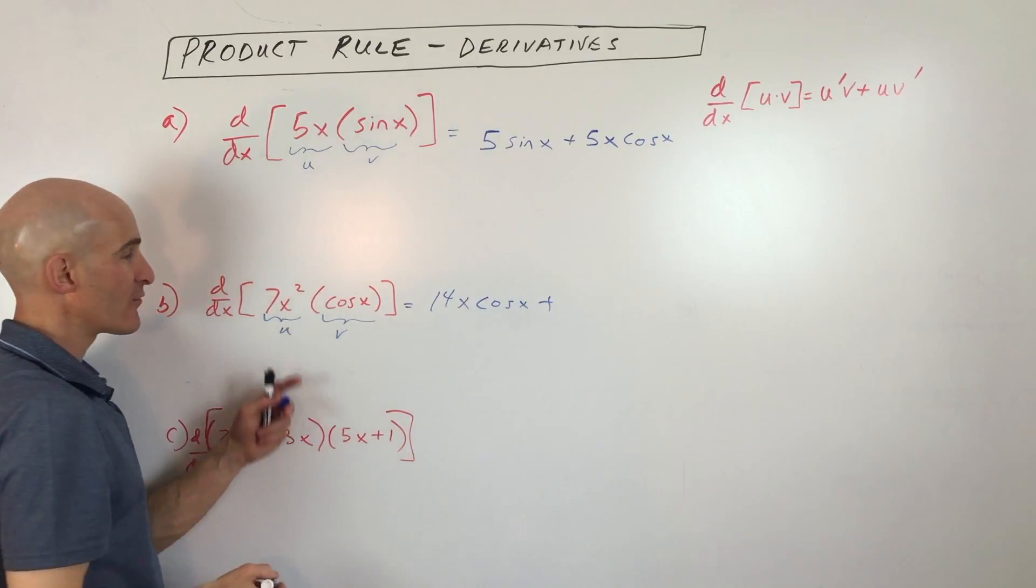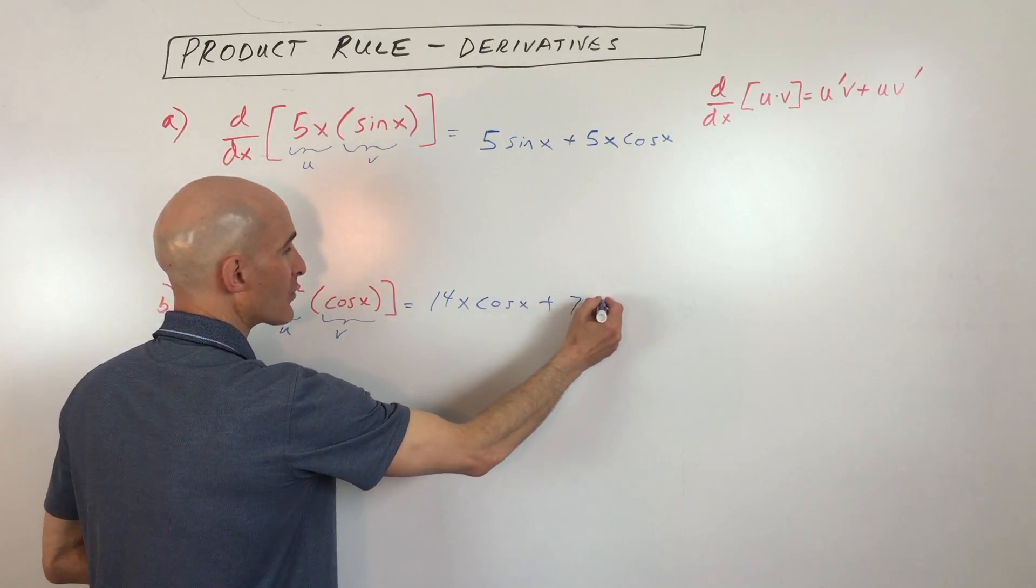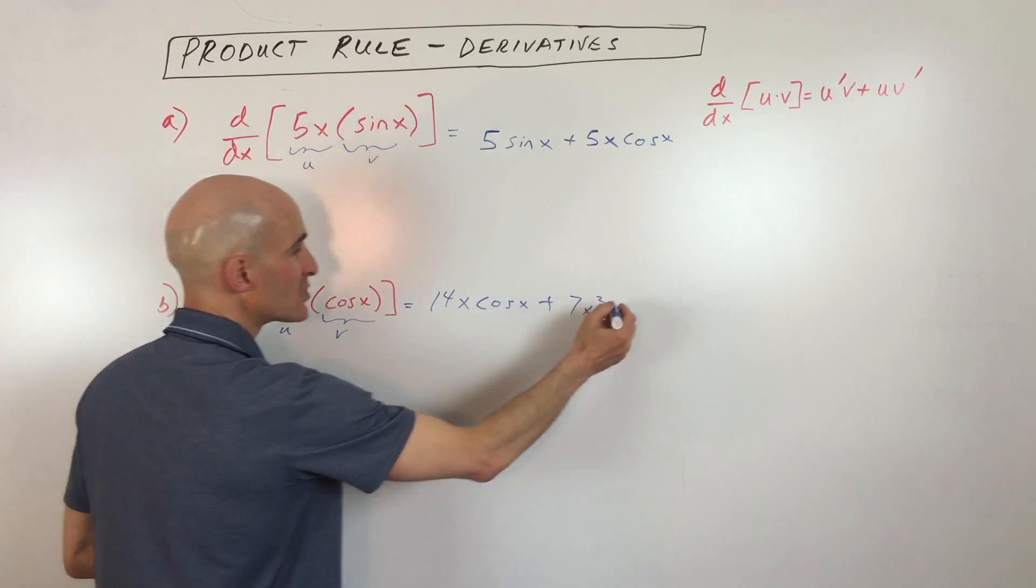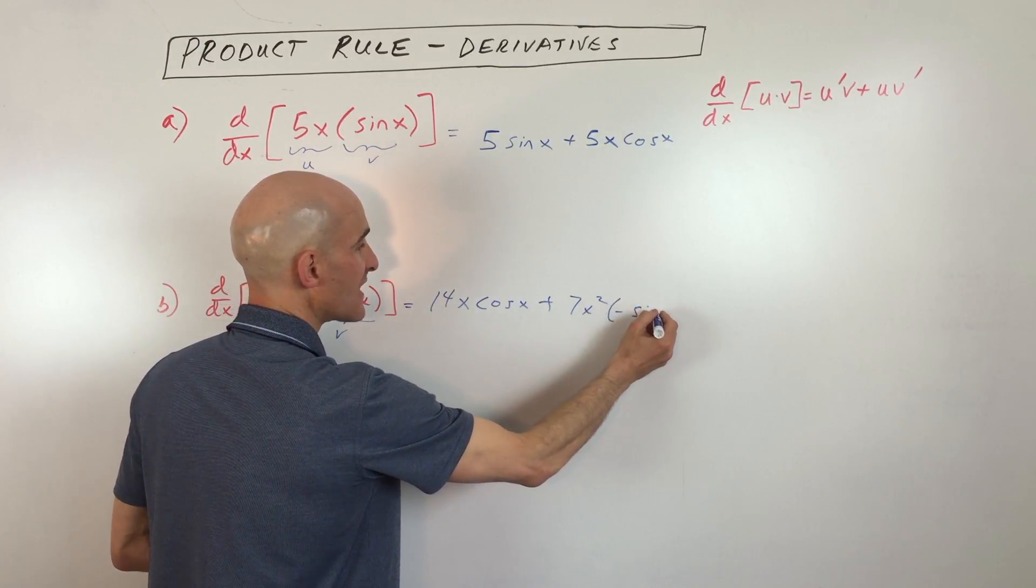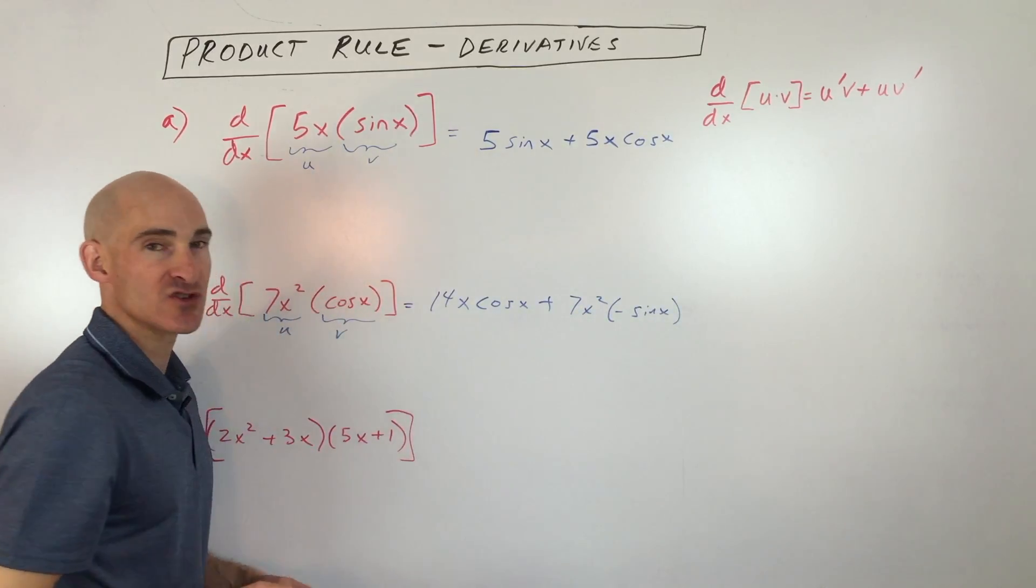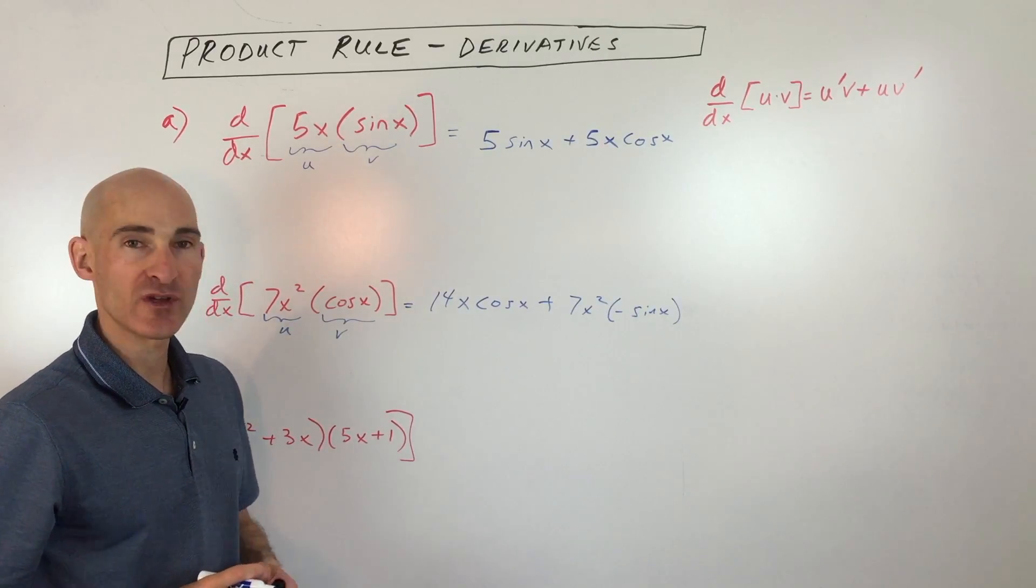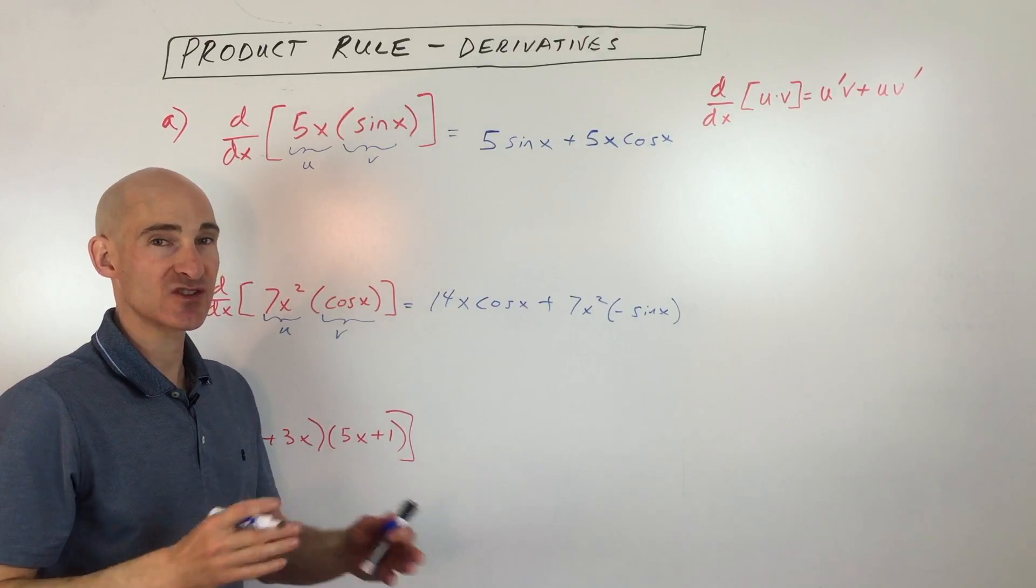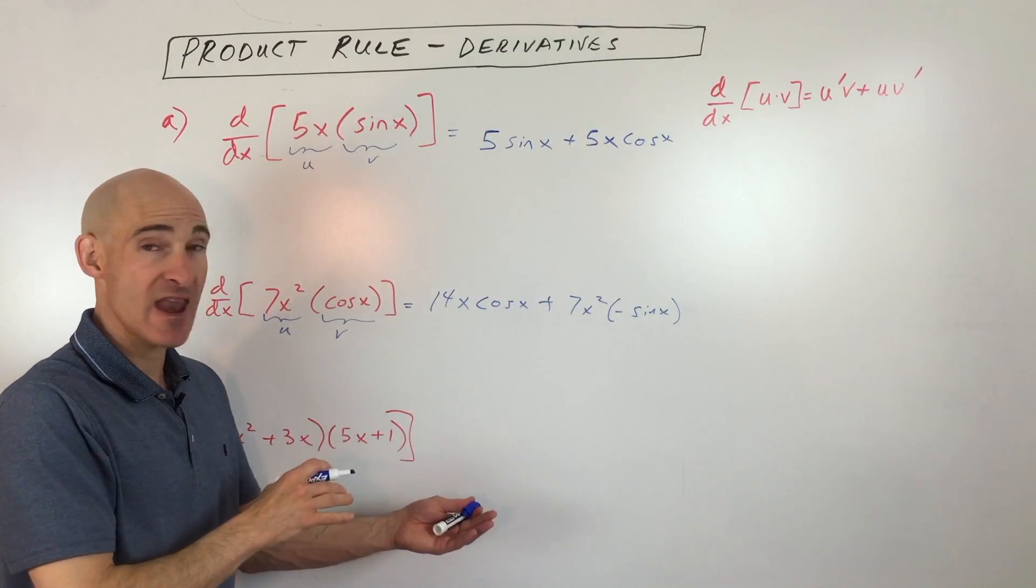Plus, now we're going to reverse it, we're going to leave the 7x squared alone, and we're going to take the derivative of the cosine x, which is negative sine of x. So some of these you're going to have to start memorizing as you go through calculus to make it easier. Derivative of sine is cosine, derivative of cosine is negative sine.